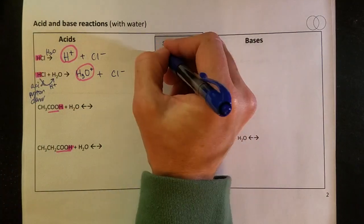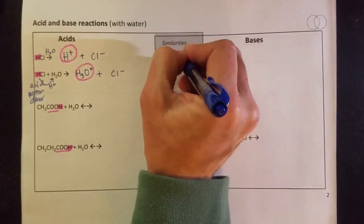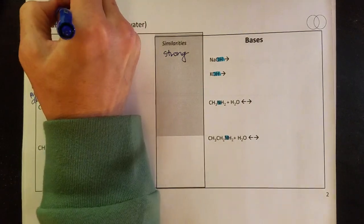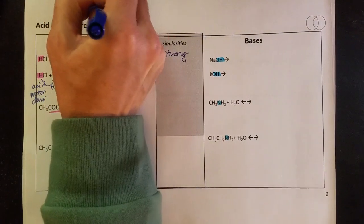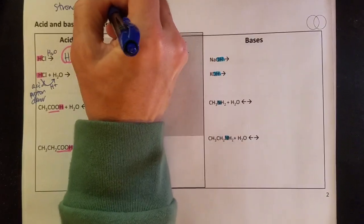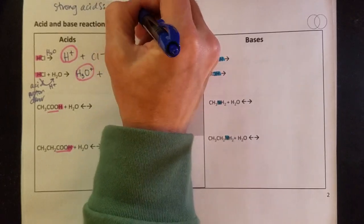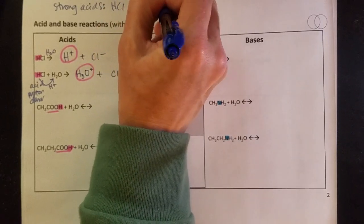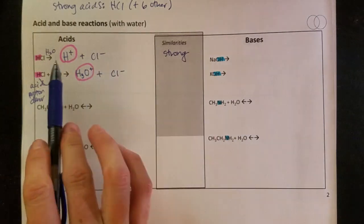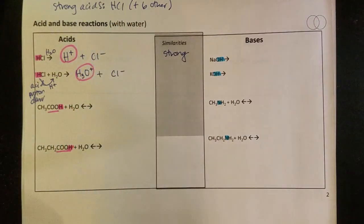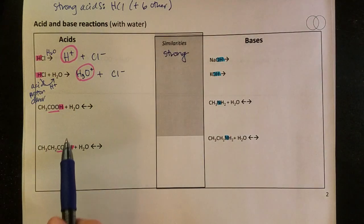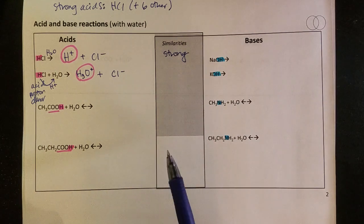This is what we would call a strong acid. And for strong acids, you need to memorize that hydrochloric acid is a strong acid. There are six other strong acids, but you just are responsible for knowing HCl is a strong acid. We'll also see some strong bases over here in a minute.